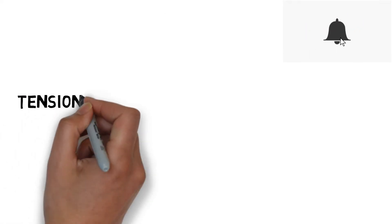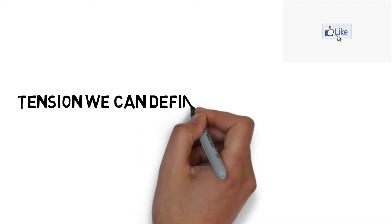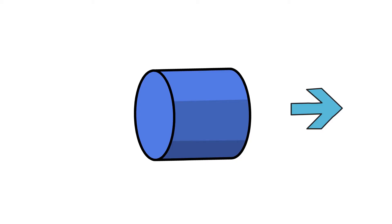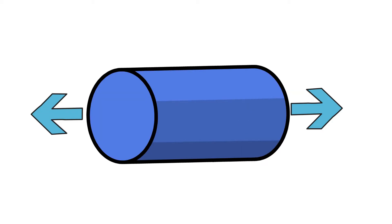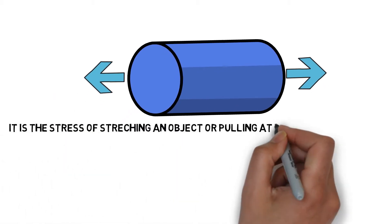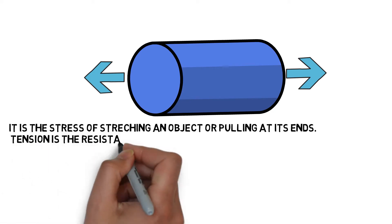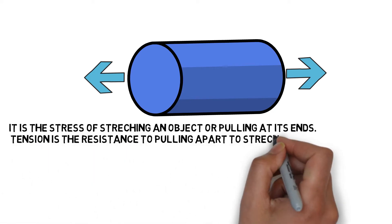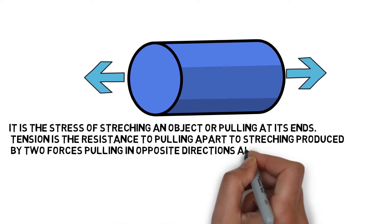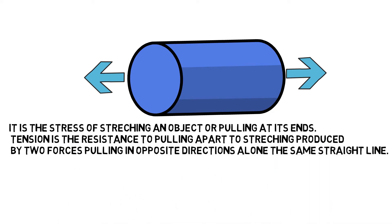Tension can be defined as a pulling force. It is the stress of stretching an object or pulling at its ends. Tension is the resistance to pulling apart or stretching, produced by two forces pulling in opposite directions along the same straight line.